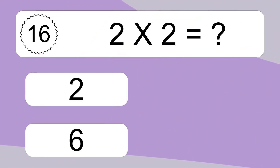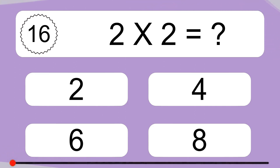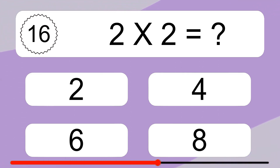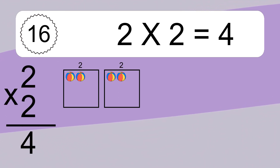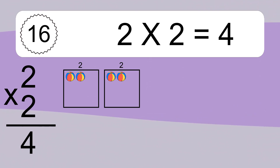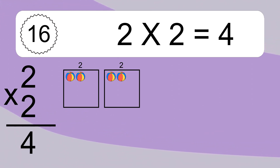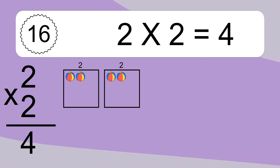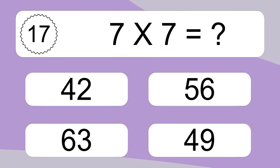2 times 2 equals what? 2 times 2 equals 4. We have 2 boxes, and each box has 2 colorful balls inside. If you count all the balls in all the boxes together, you will have 2 times 2 balls. This equals 4 balls.